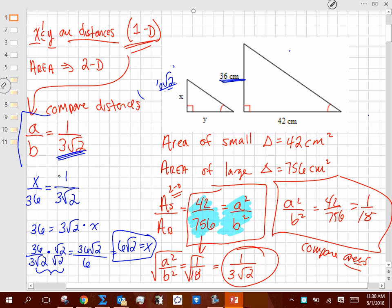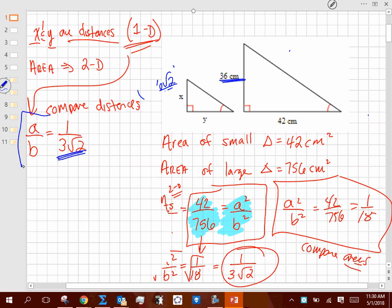Now, in the event of trying to find y, finding y is the exact same work. What's y going to compare to? 42, and it should compare in the fashion of 1 to 3 radical 2. So we get 3 radical 2 y is equal to 42. So we get 42 radical 2 over 6. What's that reduce to? It's going to be 7 radical 2.